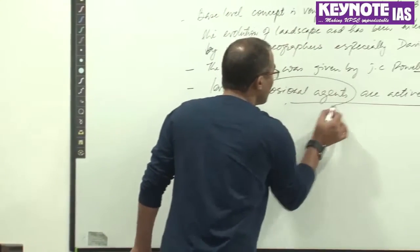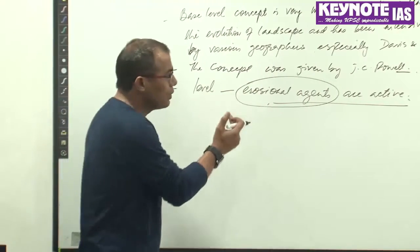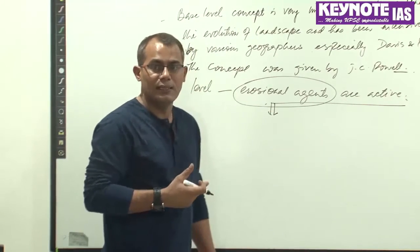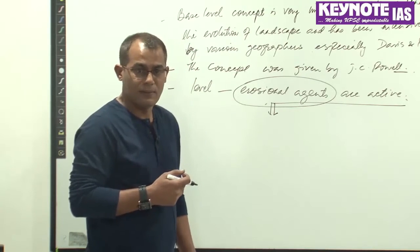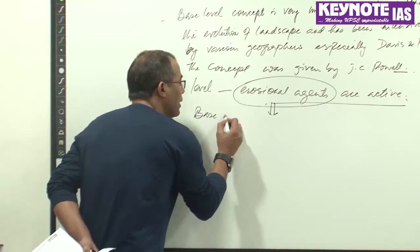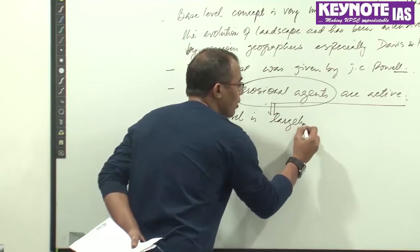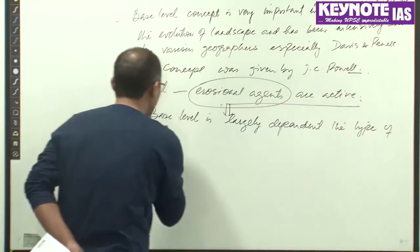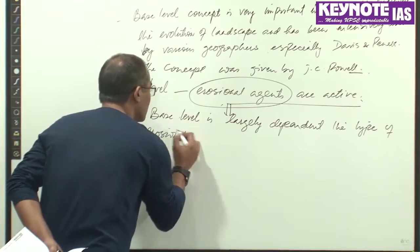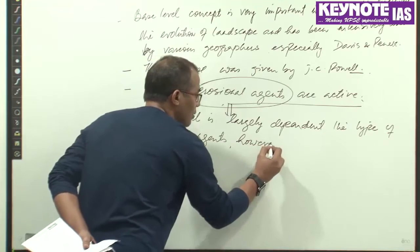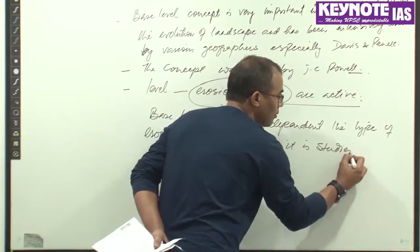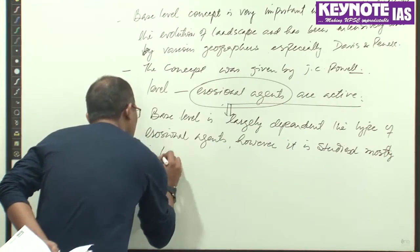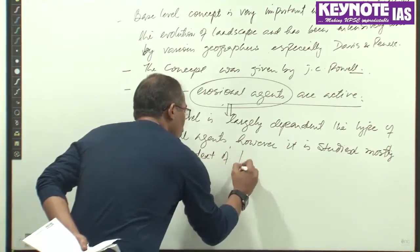Once you have mentioned erosional agents, in continuation — which will bring coherency in your answer — talk about erosional agents. Different erosional agents have different base levels. So base level is largely dependent on the type of erosional agent. However, it is studied mostly in the context of fluvial base level.